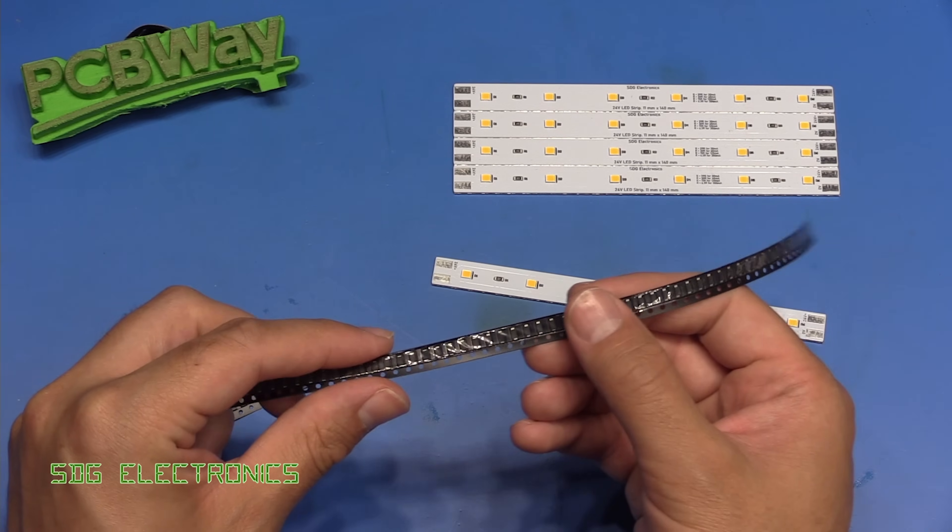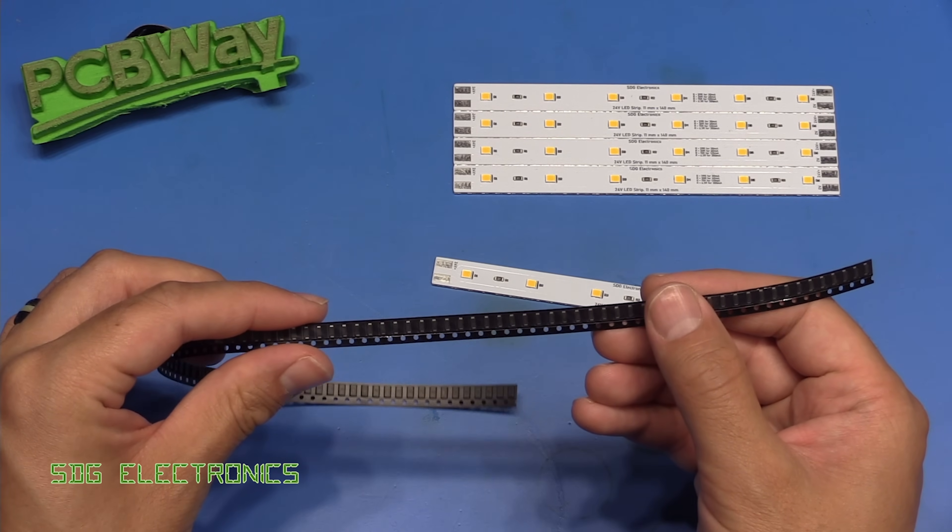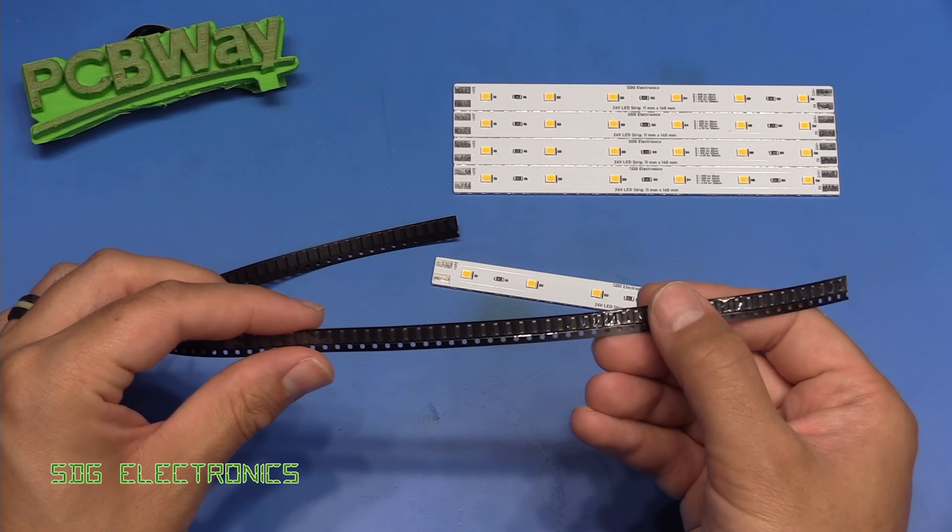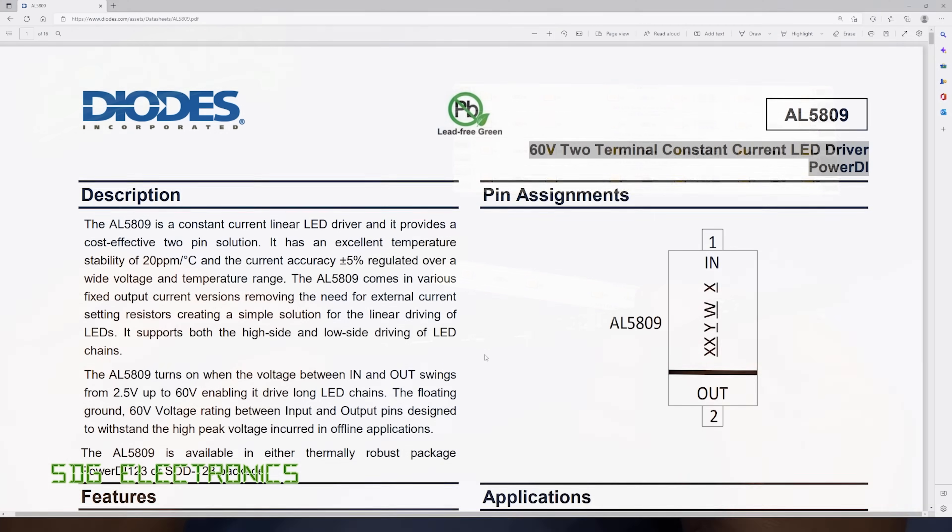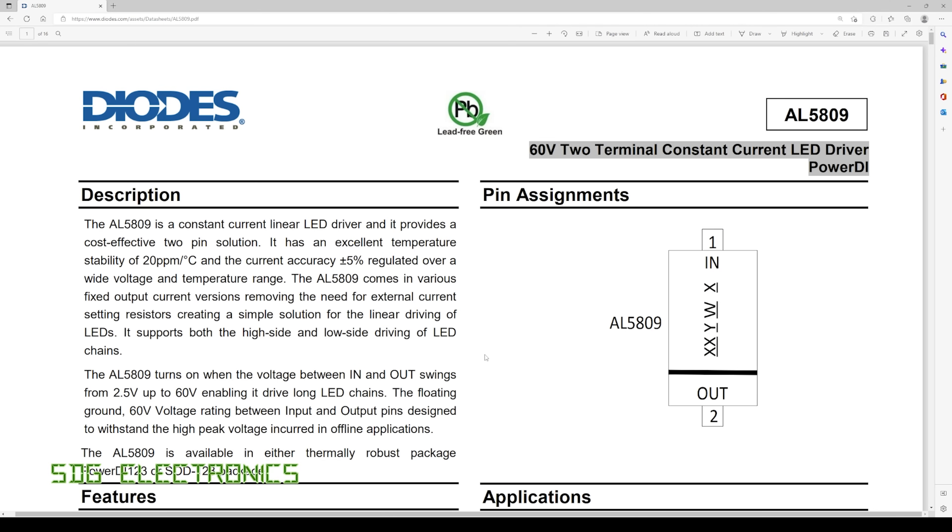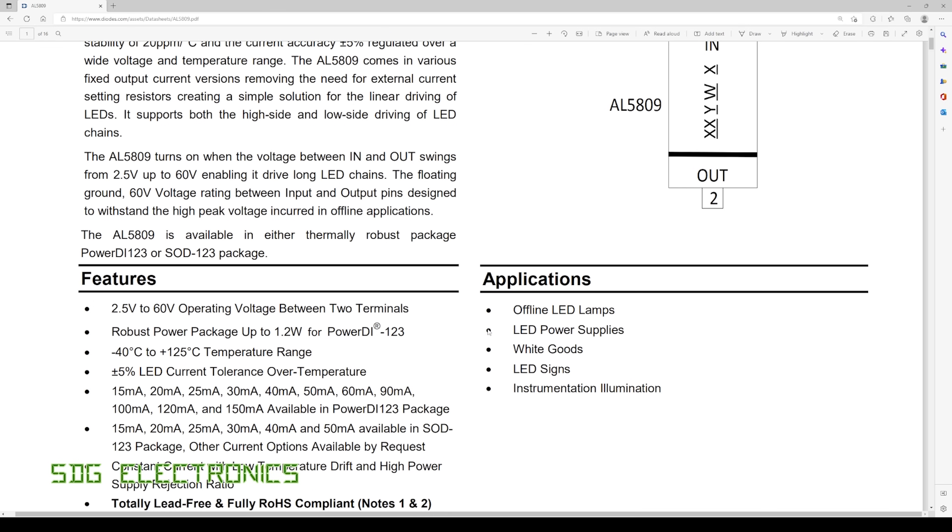I'm sure many of you have seen these before but they will be new to some of you. We've got these little devices here and let's have a look at the datasheet for them. This is the device that we're going to be testing today. It's the AL5809 and this is a really straightforward device to use.